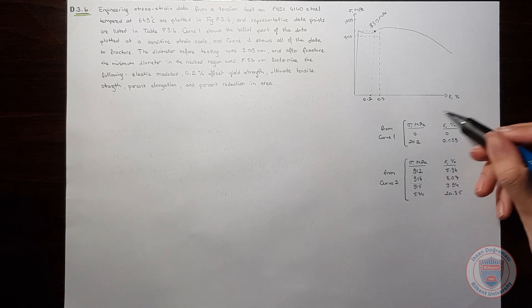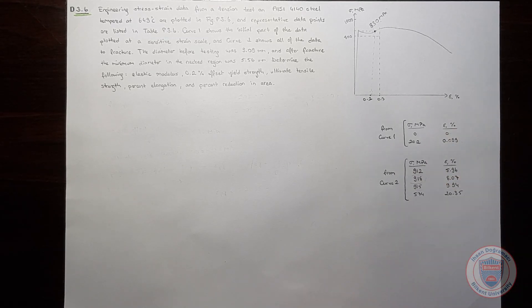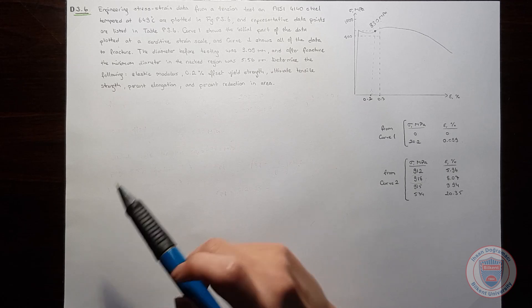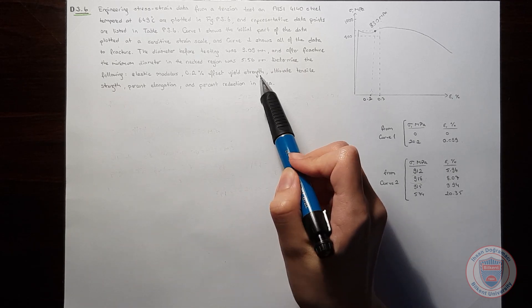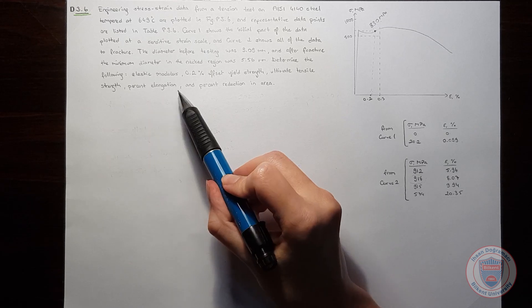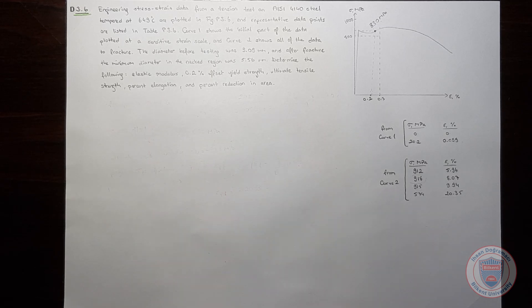In this question, we are given some data from a tension test on AISI 4140 steel, and it wants us to find elastic modulus, 0.2% offset yield strength, ultimate tensile strength, percent elongation, and percent reduction in area.